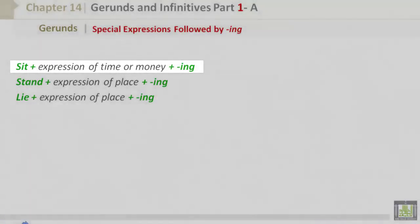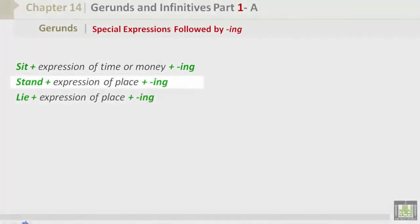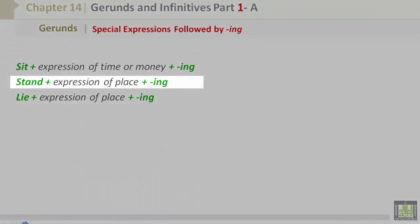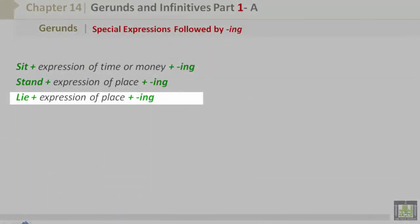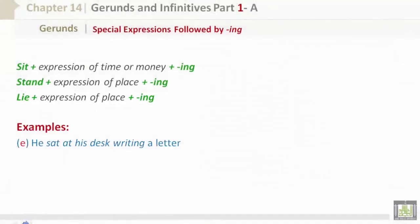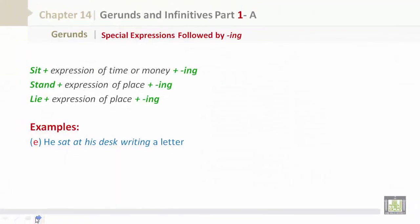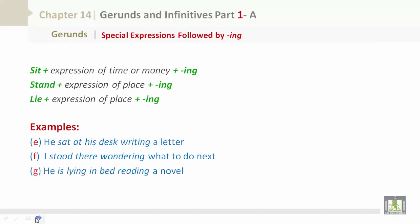Additional special expressions followed by -ing: sit plus expression of place plus -ing, stand plus expression of place plus -ing, and lie plus expression of place plus -ing. Examples: 'He sat at his desk writing a letter.' 'I stood there wondering what to do next.' 'He is lying in bed reading a novel.'